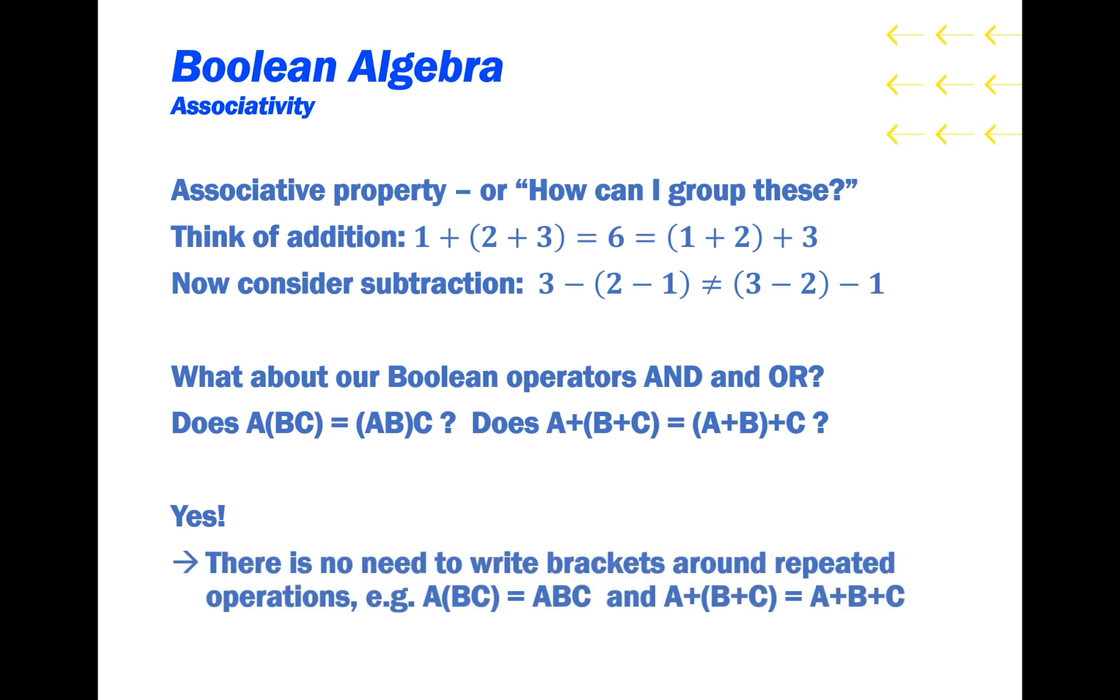That means that there's no need to write brackets around repeated operations. So A and B and C can just be written as A and B and C without the brackets, and similarly with the ORs.